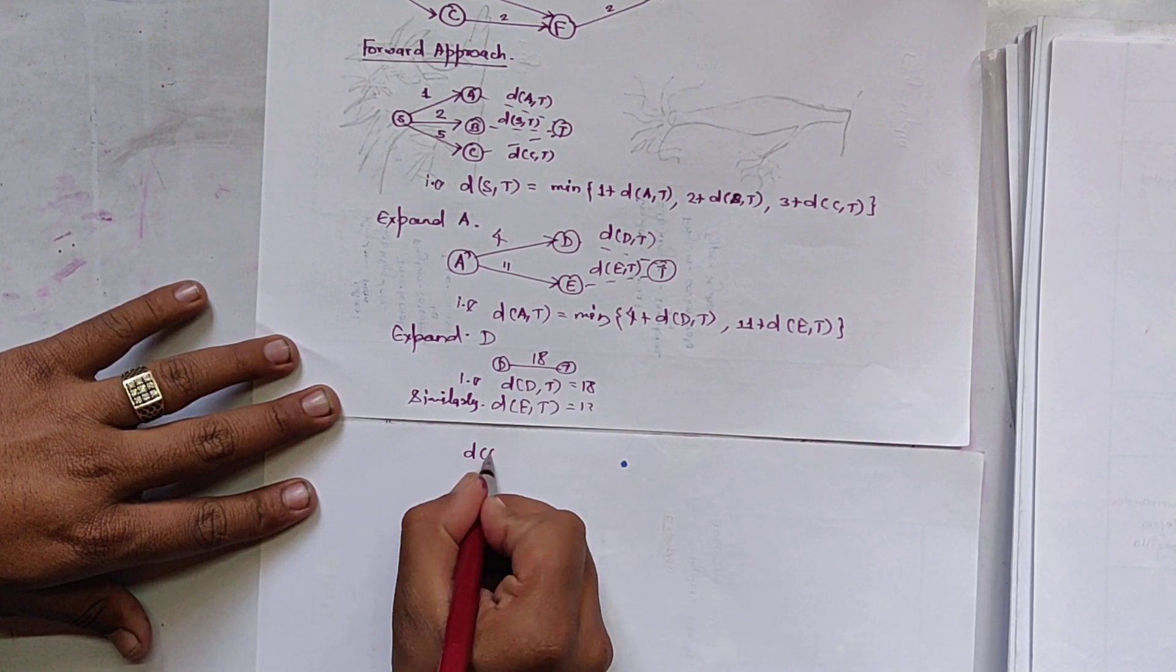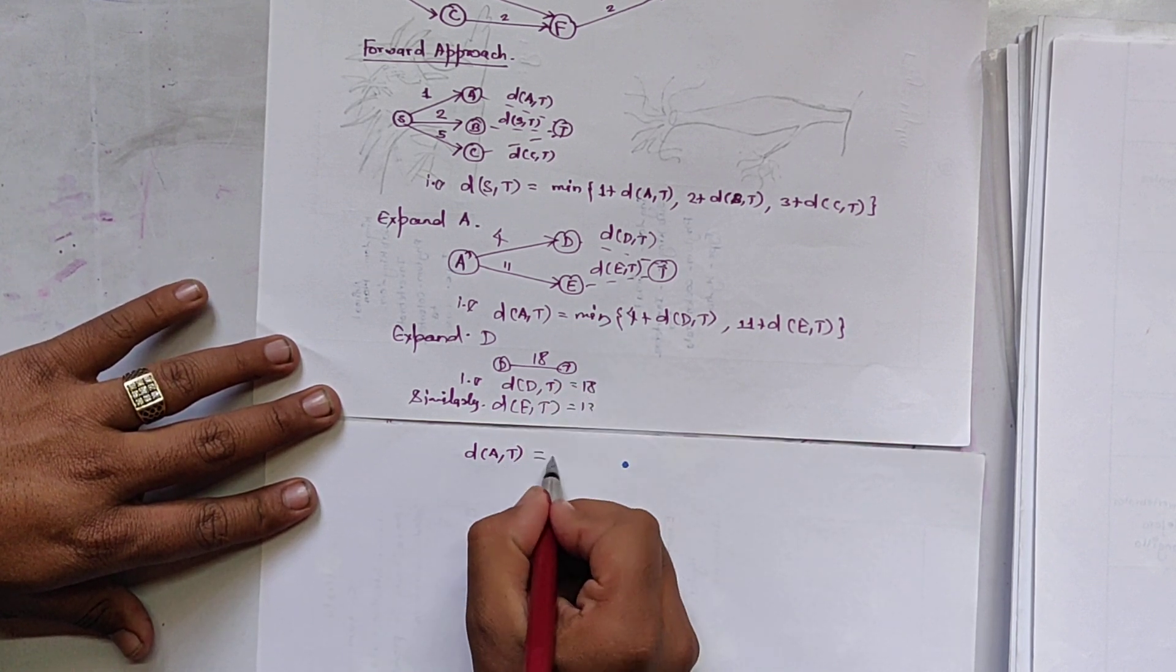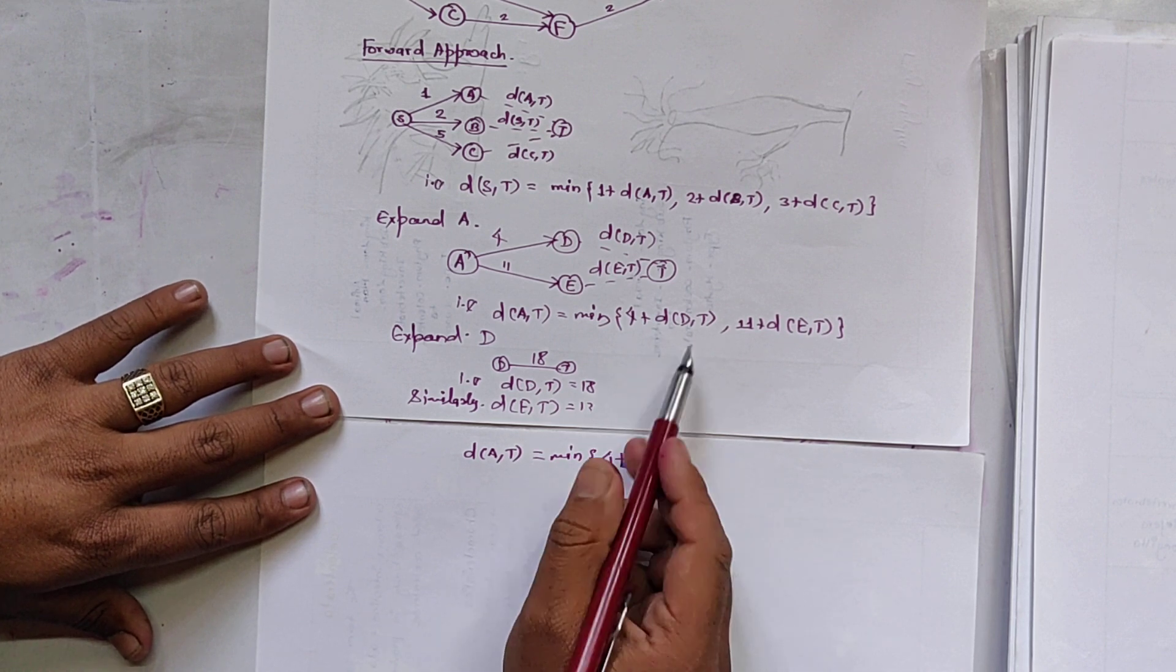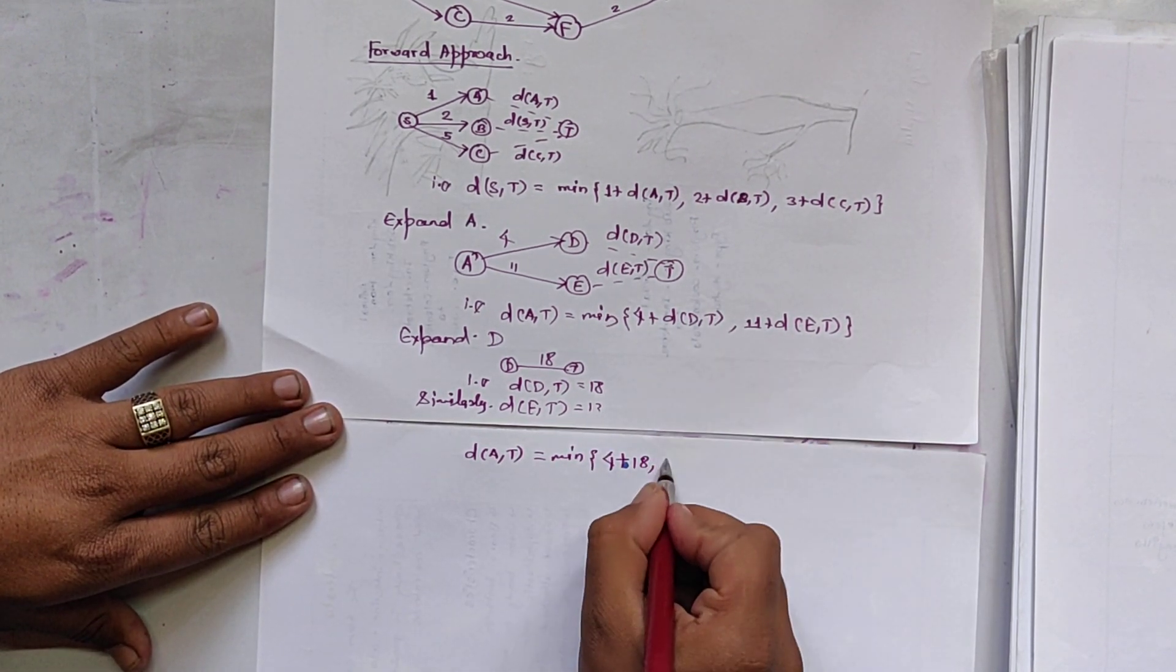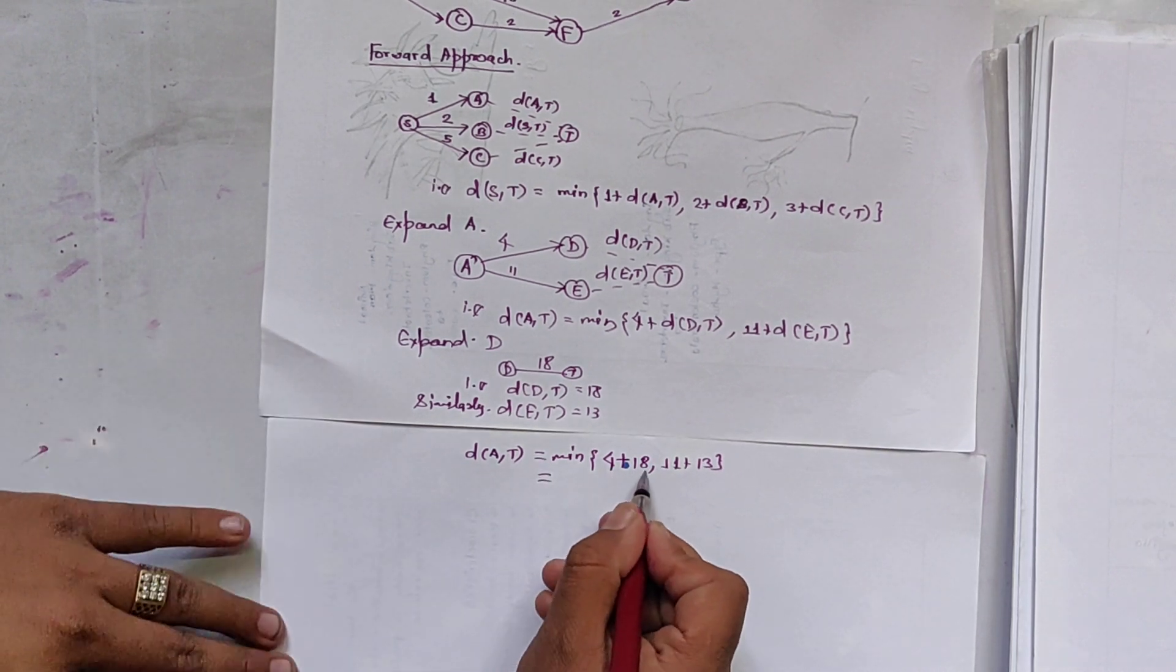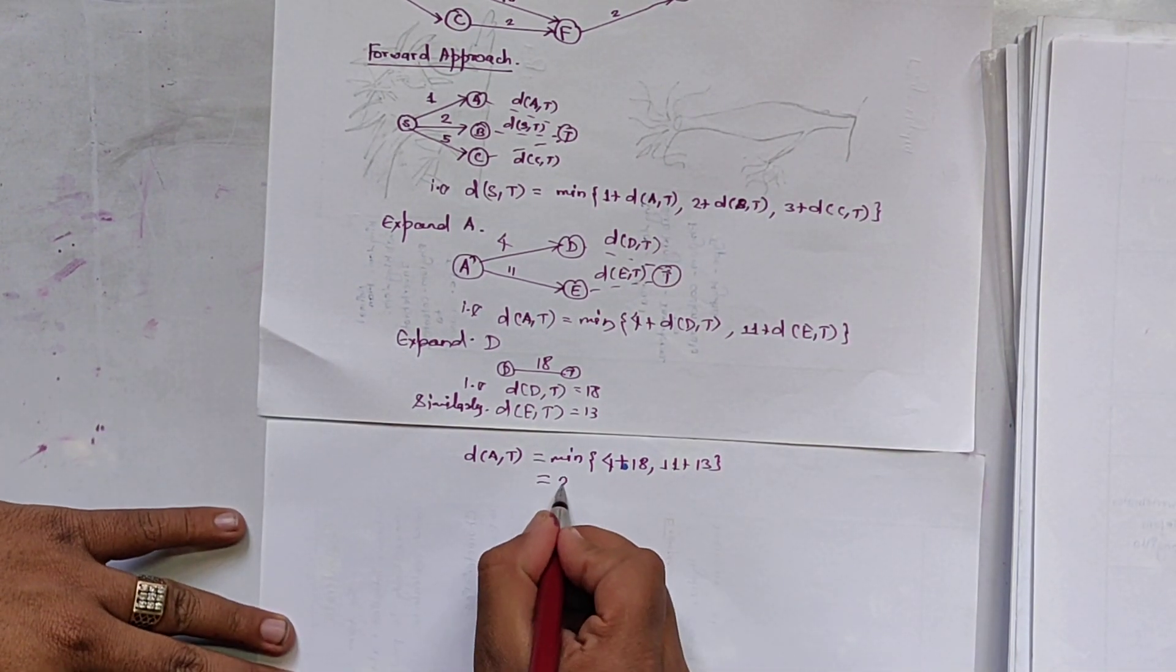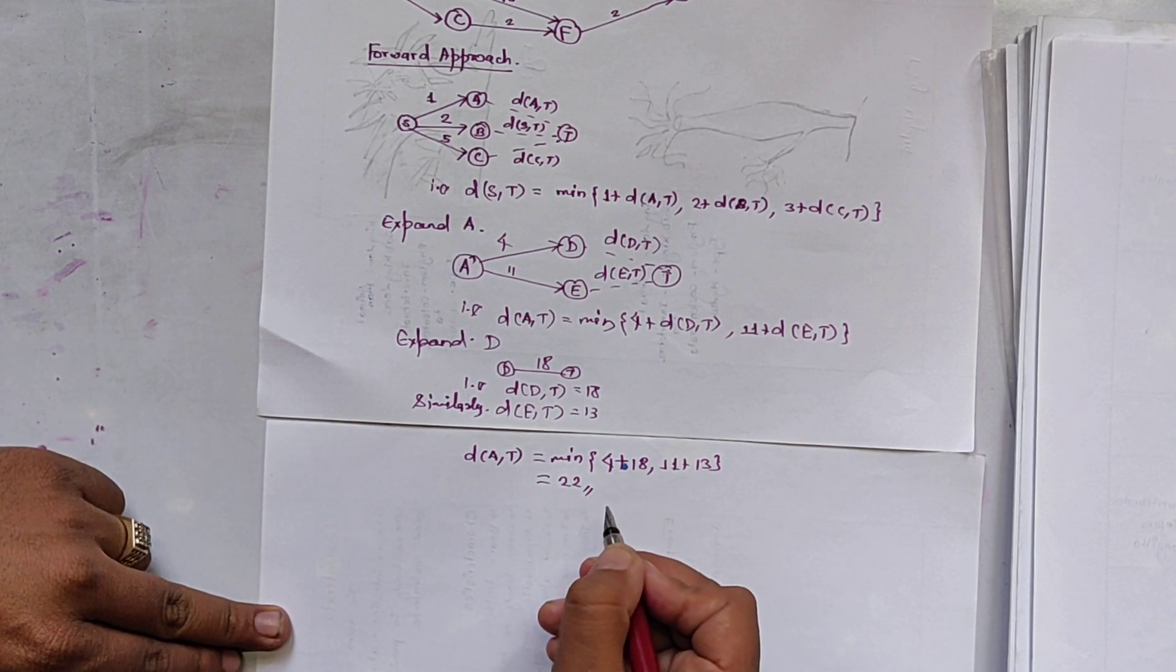DAT is equal to minimum value of 4 plus DDT is 18, and 11 plus DET is 13. So 4 plus 18 is 22. 11 plus 13 is 24. The minimum value is 22. So we get DAT equals 22.